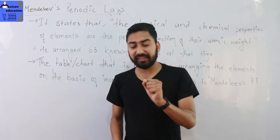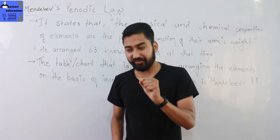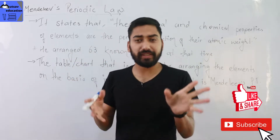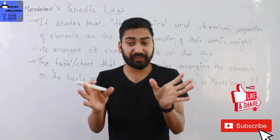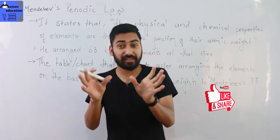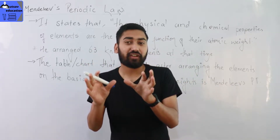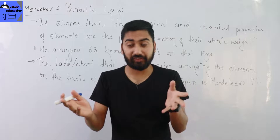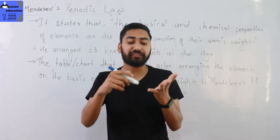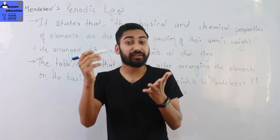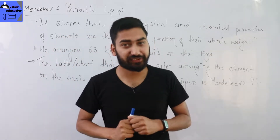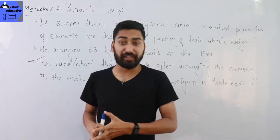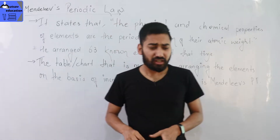First, what is the Periodic Table? I will revise the previous class. The Periodic Table is the arrangement of elements on a specific chart or table on the basis of their similar or dissimilar characteristics. That is the Periodic Table.